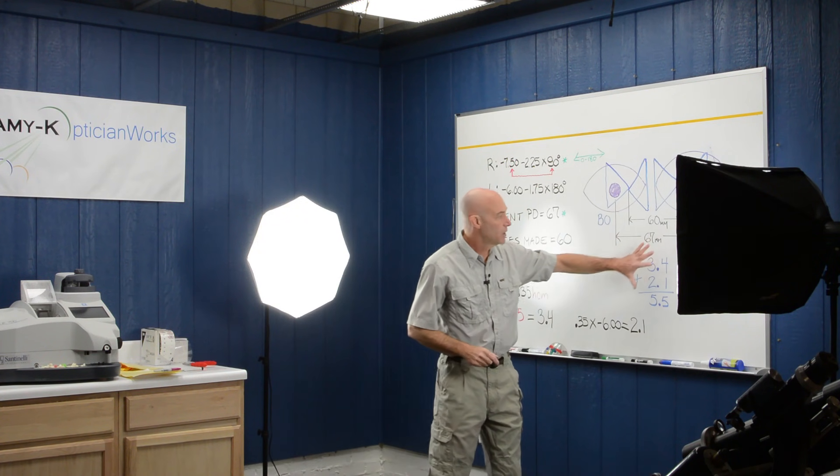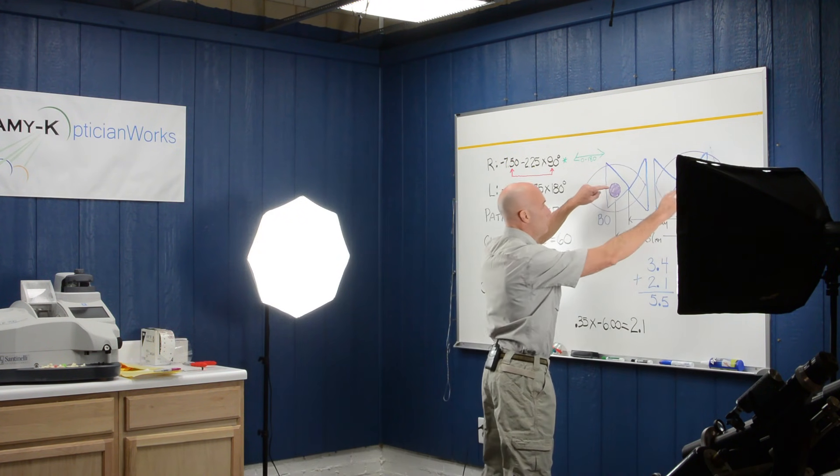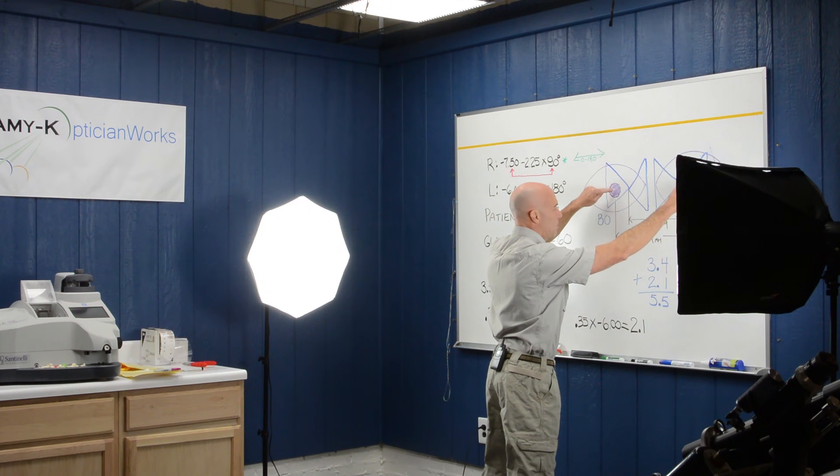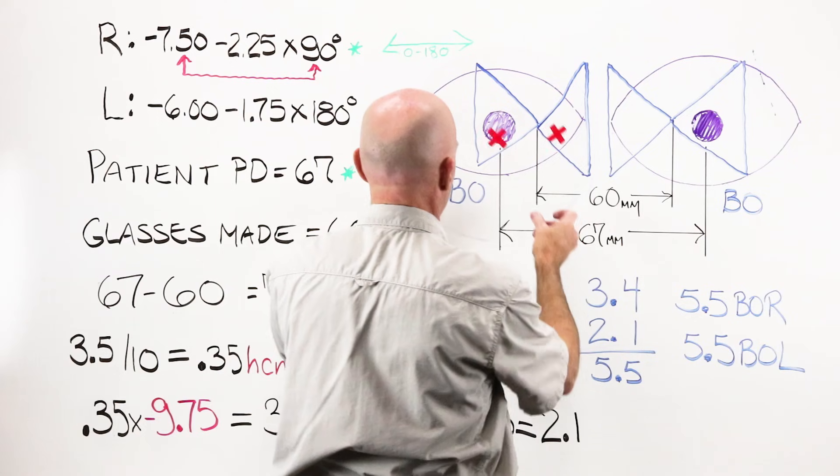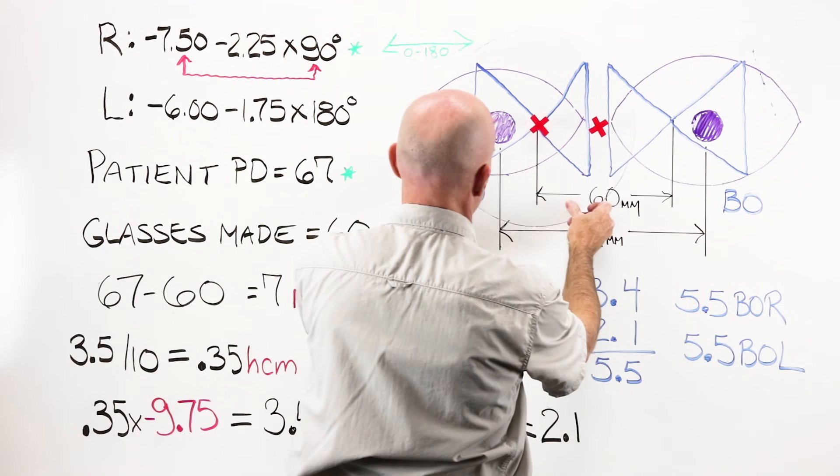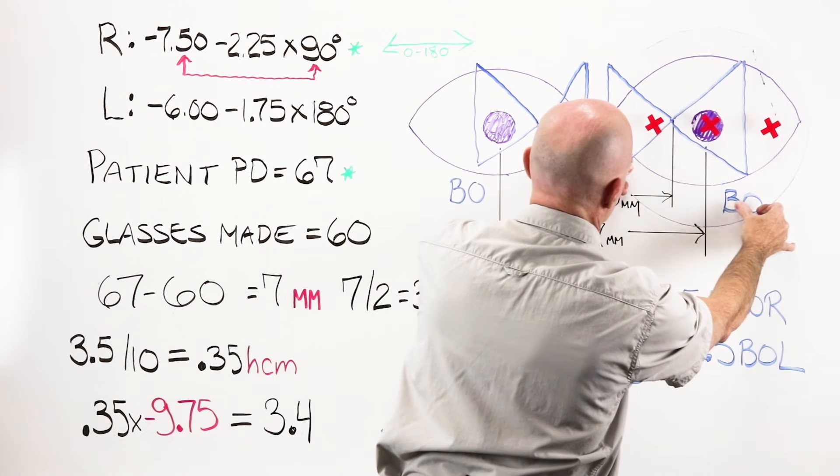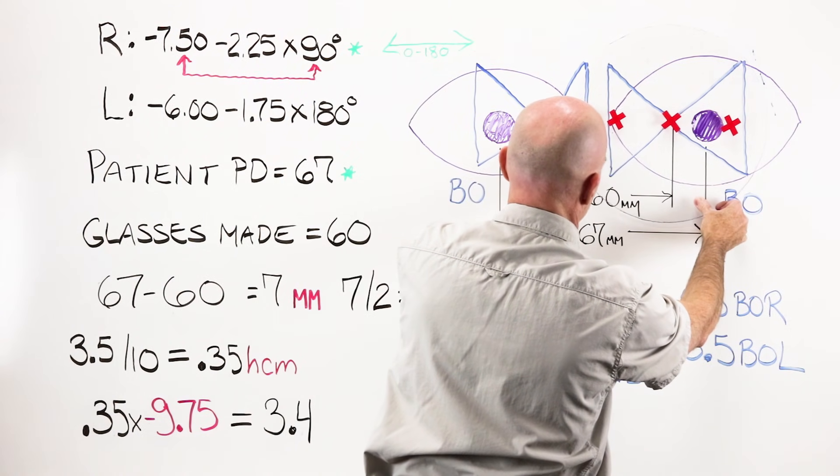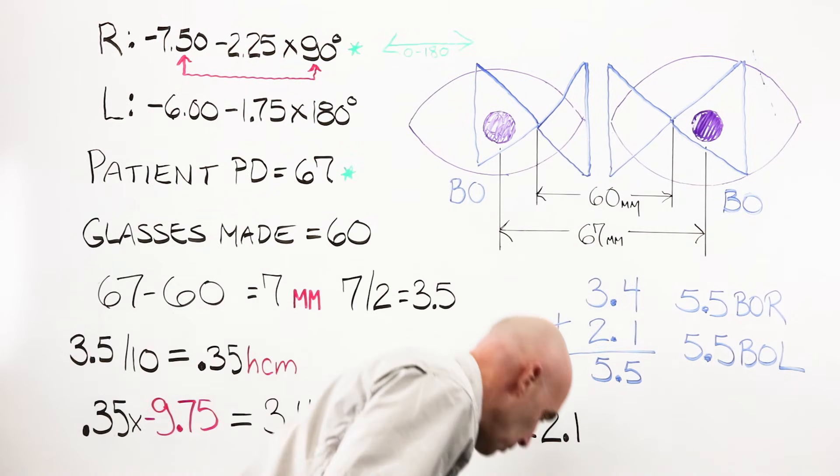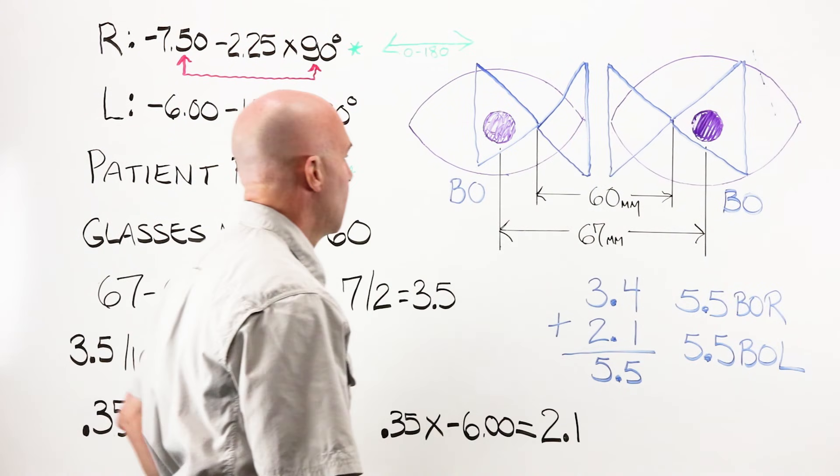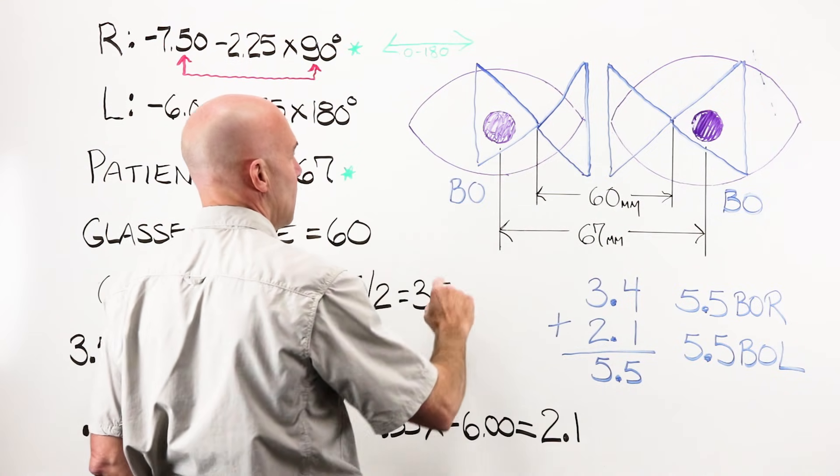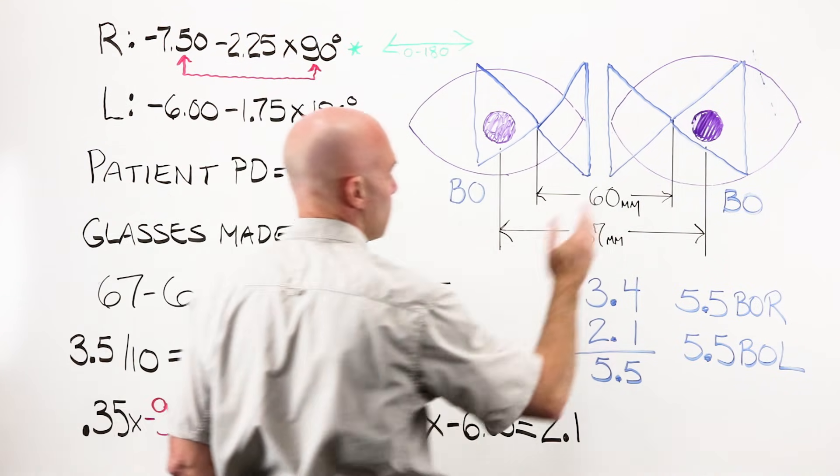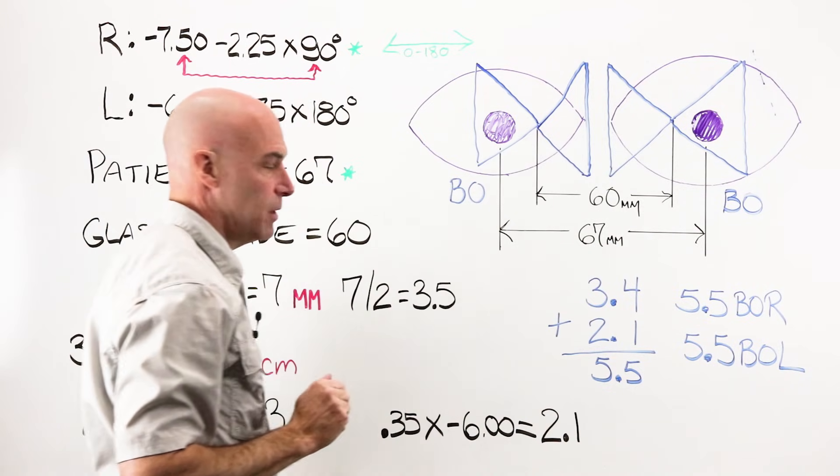When I draw this out, remember that my human is wide, they're out here. And my OCs are in here. If I wanted it there, it's there. I wanted it there, it's there. They're both moved in from where I wanted them to be. The error created by that has this person looking through base-out prism and base-out prism.